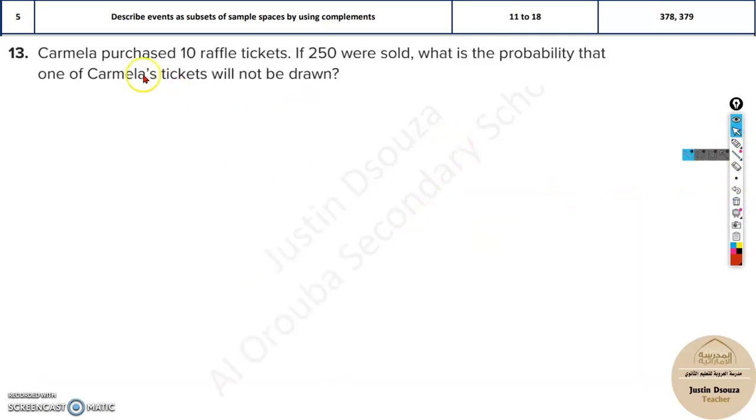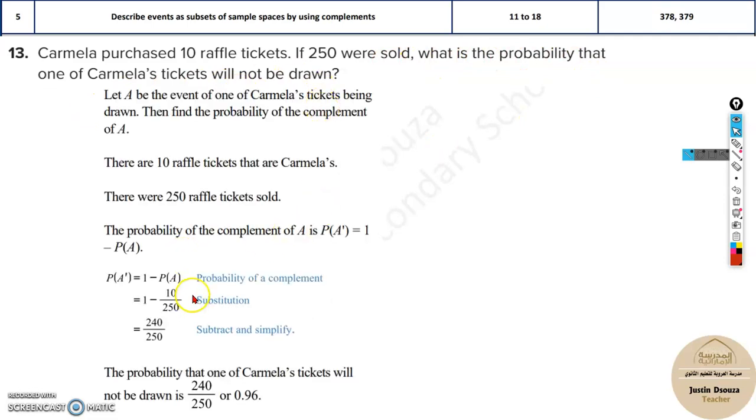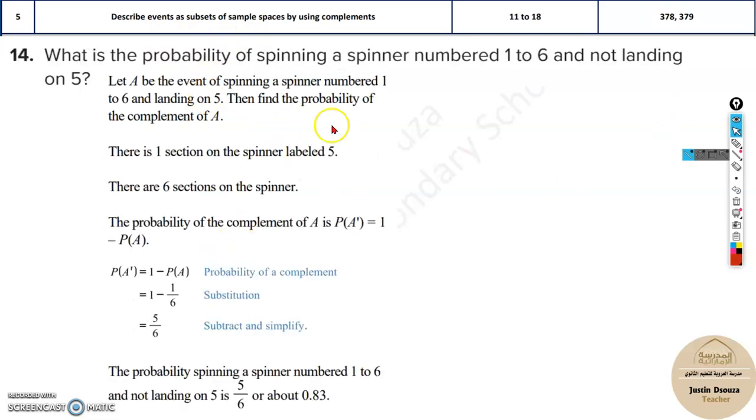Now here Carmela purchased 10 raffle tickets. If 250 were sold, what is the probability that her ticket will not be drawn? Same way. The probability of winning is 10/250. Not winning is 1 minus that. So 96% chance that her ticket won't be drawn. Please try this by yourselves and check the answers.